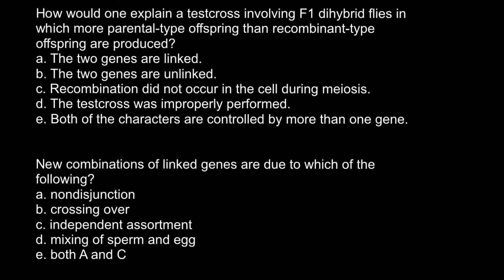Let me start with the end of the list. Answer E: both of the characters are controlled by more than one gene. When one character is controlled by more than one gene, there is a good chance that such genes are located on different chromosomes and they would segregate randomly, giving us about 50% segregation and recombination. So we can cross out this answer.